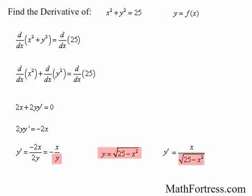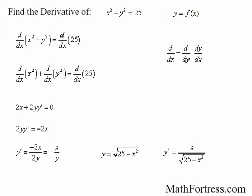We see that we get the same answer as when we found the derivative the long way. Remember that y is a function of x — in order to find a derivative, we need to apply the chain rule at all times. Using Leibniz notation, the derivative with respect to x of a function of y equals the derivative of that function with respect to y, times dy/dx — this is just an application of the chain rule. In our next video, we will work on some examples.